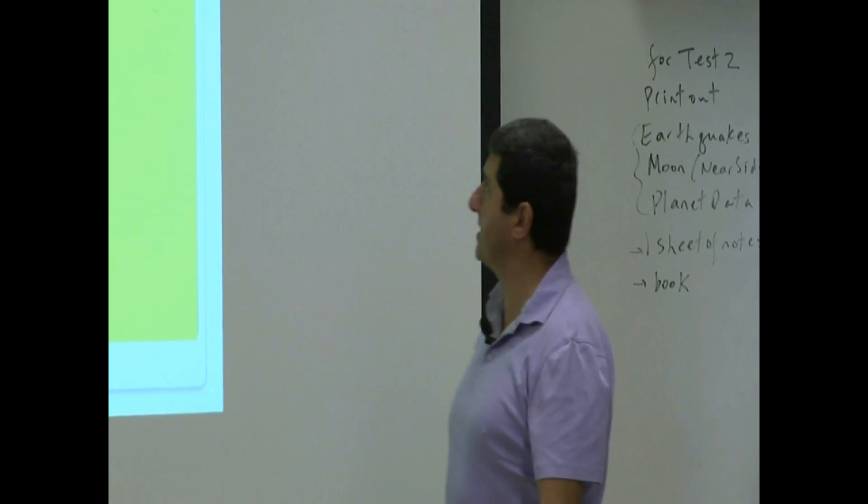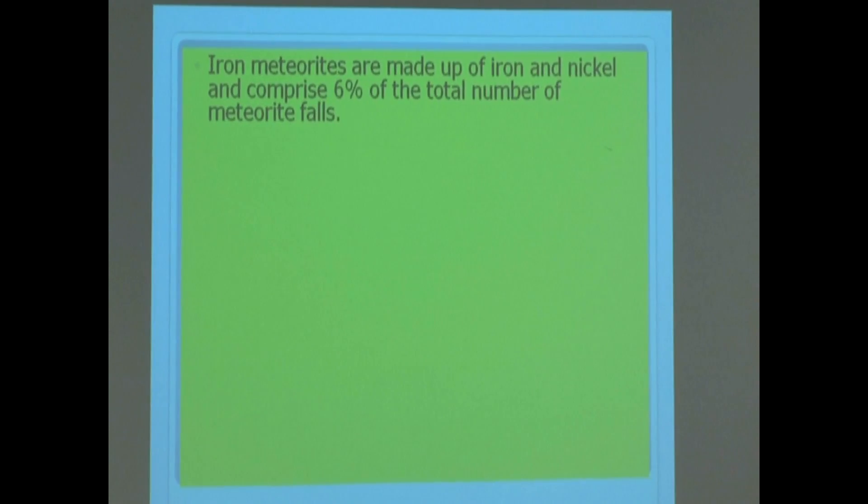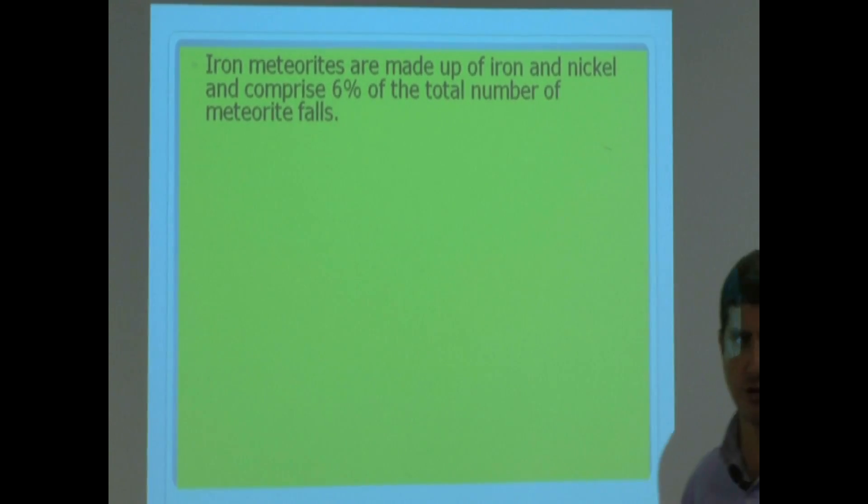Iron meteorites are made up of iron and nickel and comprise 6% of the total number of meteorite falls, so not that frequent.